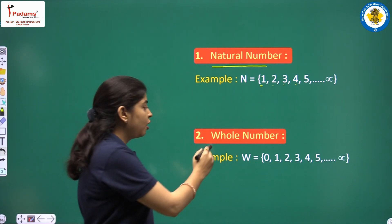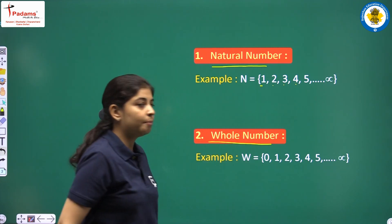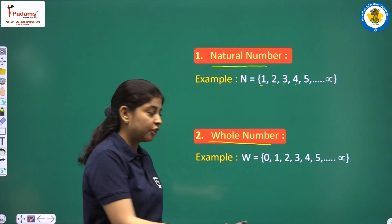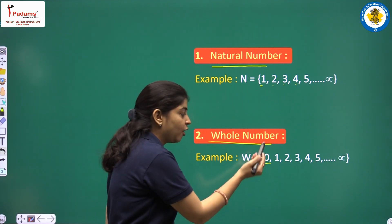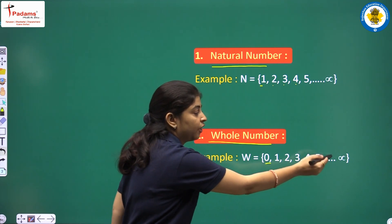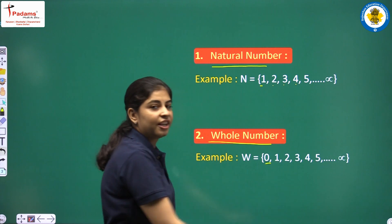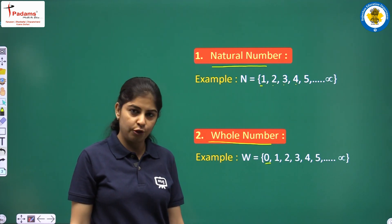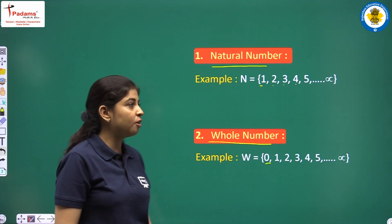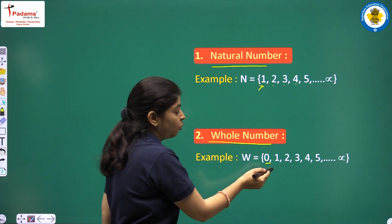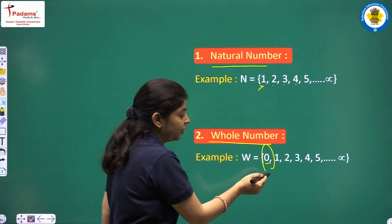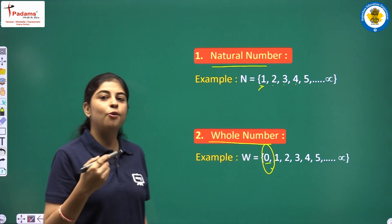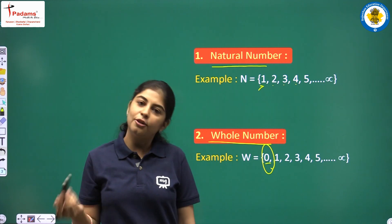The second definition is of whole numbers. Whole numbers are numbers that start with zero and then 1, 2, 3, 4, 5 up to infinity. Natural numbers and whole numbers can be confusing: natural numbers start with 1 and whole numbers start with 0.